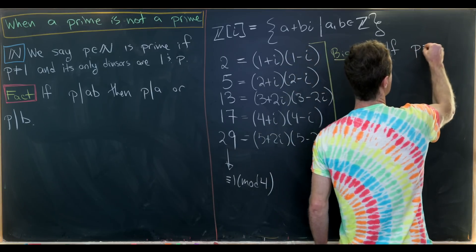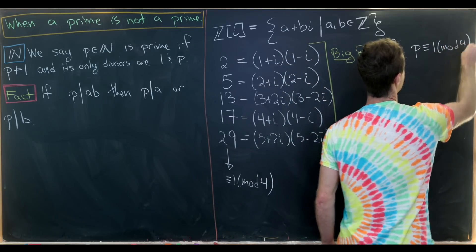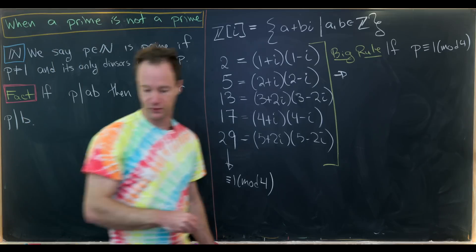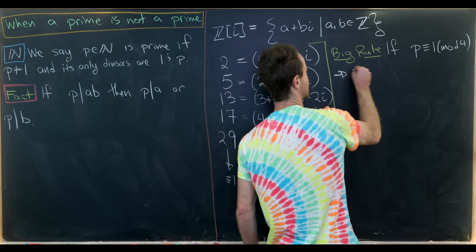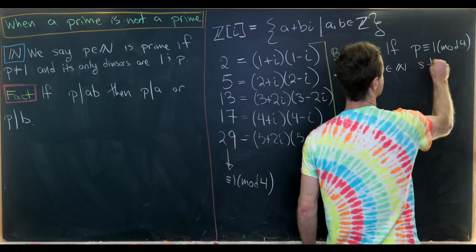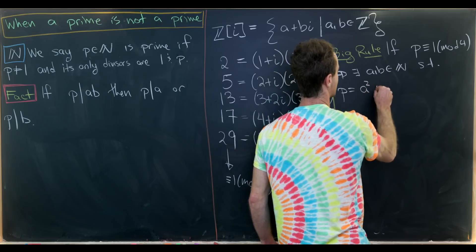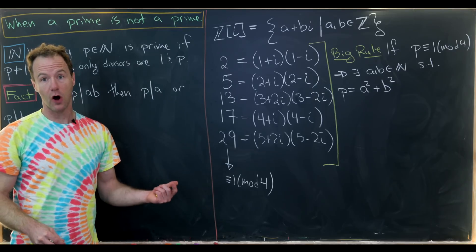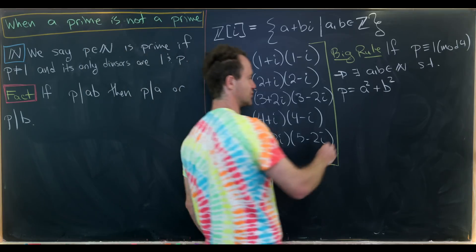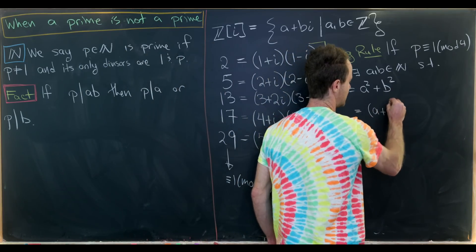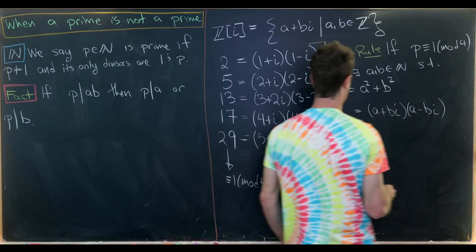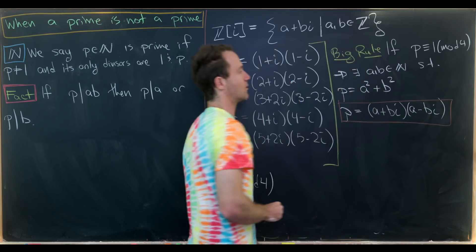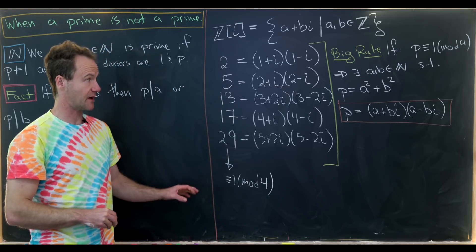The big rule is: if we have a prime P congruent to 1 modulo 4, then that prime can be written as the sum of two squares. So there exist natural numbers a and b such that P equals a squared plus b squared. The beautiful thing is that a sum of squares always factors over the Gaussian integers as (a + bi)(a − bi). So primes of the form 1 mod 4 are not primes in the Gaussian integers.